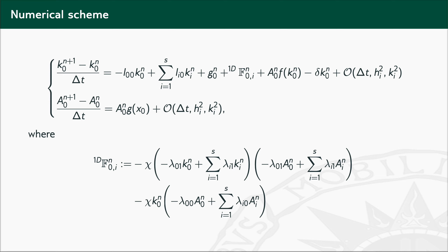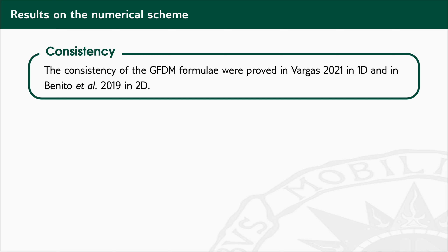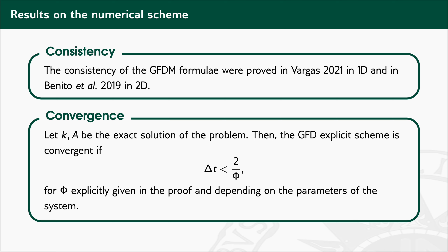Concerning this numerical scheme, we are able to prove two main results. First, the consistency of the explicit formulae of the GFDM, which was proved in 2021 for the one-dimensional case and by Benito and his group in 2019 for the two-dimensional case. More importantly, the convergence result shows that the explicit scheme converges under certain conditions on the temporal step, and we can explicitly find these conditions, which depend on the parameters of the system and on the distribution of nodes in the domain.